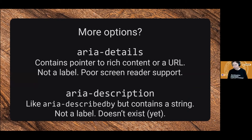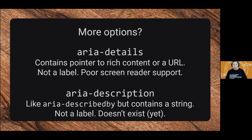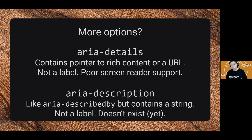If you're a fan of reading specifications, you may notice a couple of other items that catch your eye and make you think 'I could use that for labeling too.' ARIA details sounds like a reasonable option. Like ARIA describedby, it contains a pointer, but different to ARIA describedby, it points to rich content as opposed to a flat string. It is not a label, and it also has very poor screen reader support. So please do not use it.